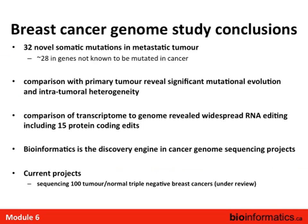To summarize the breast cancer project: 32 novel somatic mutations were revealed in this metastatic tumor; approximately 28 of the genes were not known to be mutated in cancer before. Comparison with the primary revealed significant mutational evolution and intratumoral heterogeneity. Comparison of the transcriptome to the genome revealed widespread RNA editing — many variants confirmed only in the transcriptome and not in the genome — raising questions about what these edits do and whether they're specific to cancer.